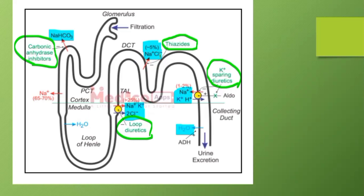Spironolactone, the potassium-sparing diuretic, acts on the collecting tubule, blocking the sodium-potassium-hydrogen ion channel but not leading to excretion of potassium — that is why it is called potassium-sparing. It leads to loss of sodium and water. Spironolactone is an aldosterone antagonist because it antagonizes the normal function of aldosterone, which is reabsorption of sodium and water and excretion of potassium. The anti-diuretic hormone also acts on the collecting tubule and causes reabsorption of water.